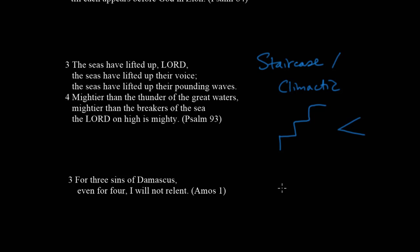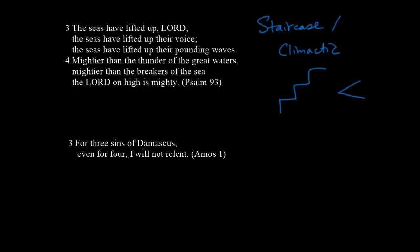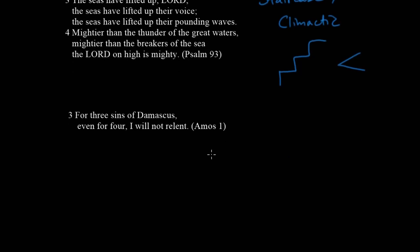Another example of the synthetic type is numerical parallelism. This has to do with counting — it's not super common, but you'll see it sometimes. Here's an example: 'For three sins of Damascus, even for four, I will not relent.' There's a focus on counting here, a kind of adding up of examples.